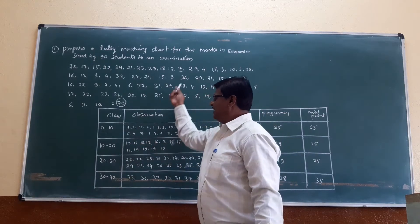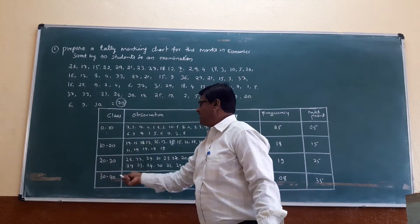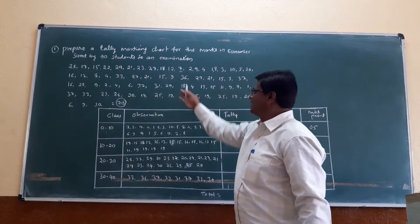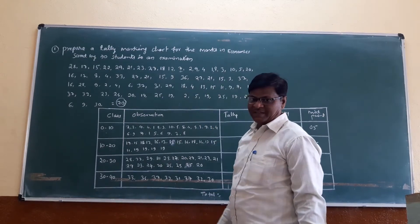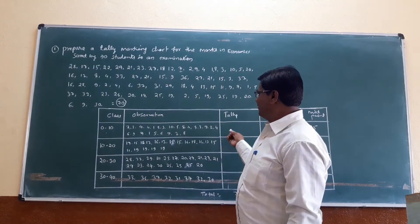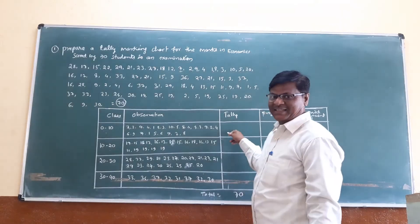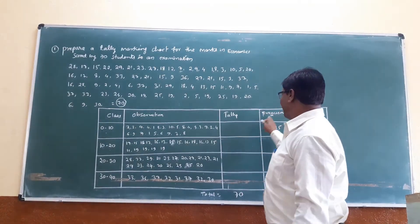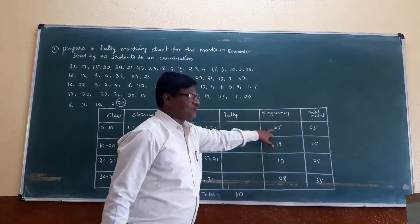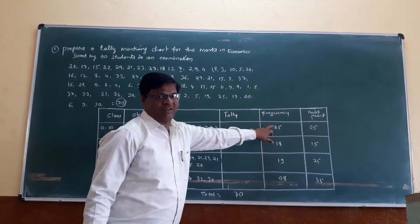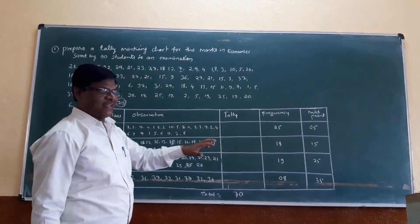Then the next classes are 10 to 20, 20 to 30, and 20 to 40. The frequency for the first class, 0 to 10, is 25.